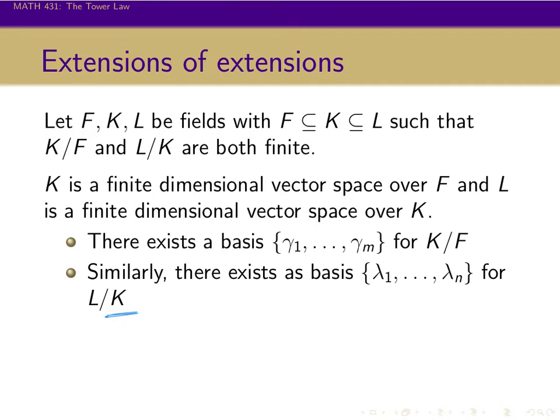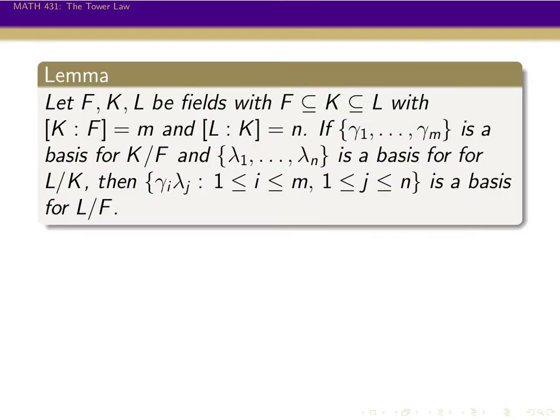To get things in L, we can use λ₁ through λₙ writing things in K, but then for everything in K we can write it using γ₁ through γₙ using coefficients from F. The question here is: what can we say about L over F, about this extension? And this is answered in the following lemma.